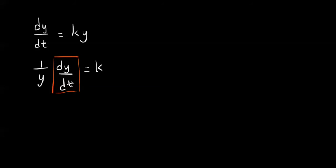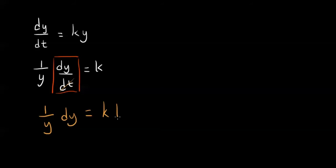If we multiply by dt on the left side, dt is going to disappear and we are going to be left with 1 over y dy, and we are going to have k dt on the right side. Now we are going to integrate this.